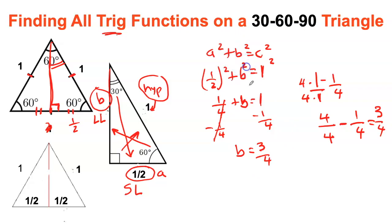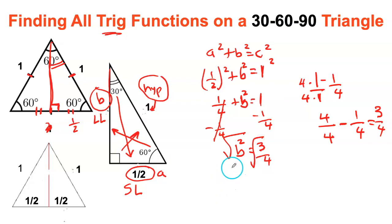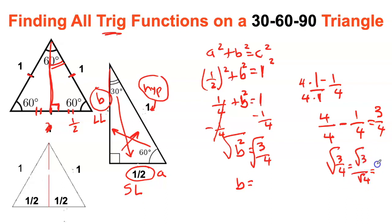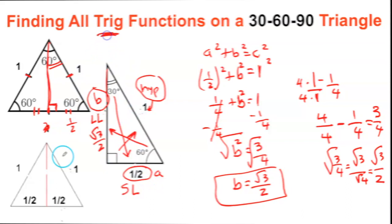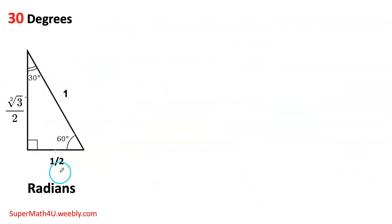I forgot — that's b squared. I need b, not b squared, therefore square root on both sides. So b equals the square root of three over four, which is the same as the square root of three over the square root of four. The square root of three we can't simplify, but the square root of four is two. So this is square root of three over two, and I have found the long leg. So the three sides are: 1, one half, and square root of three over two.